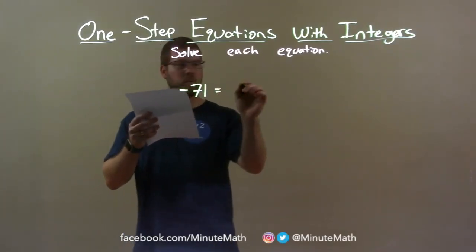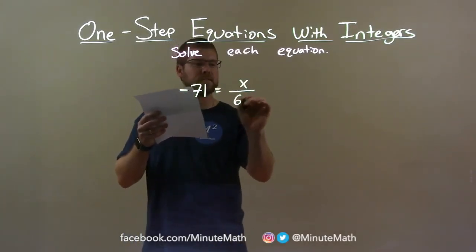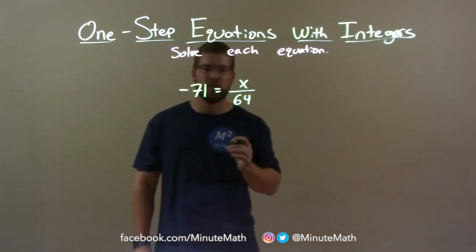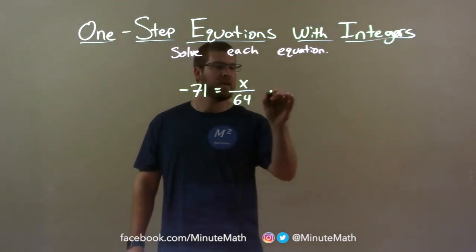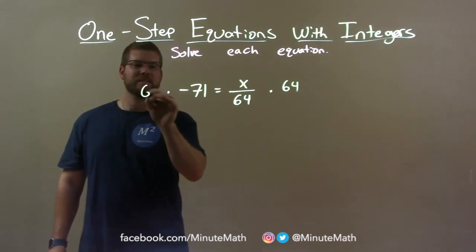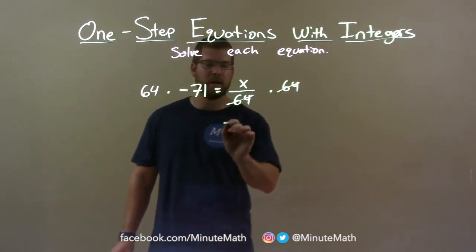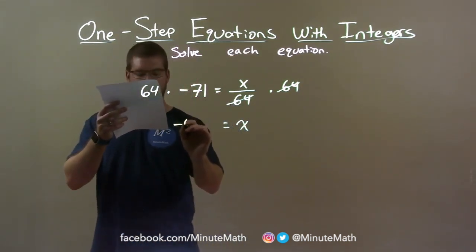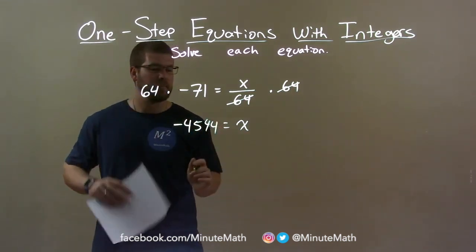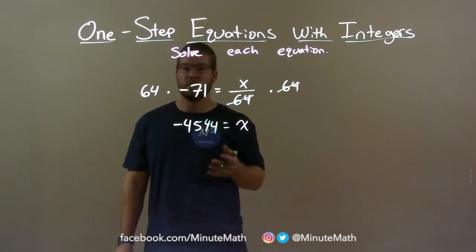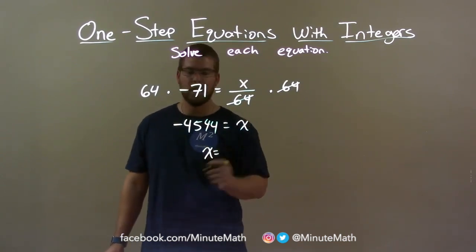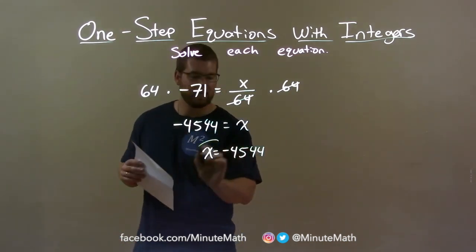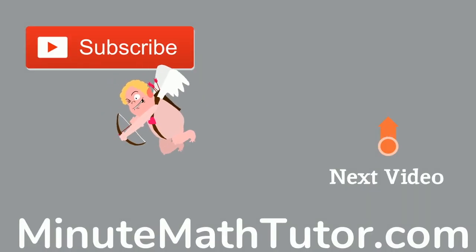Negative 71 equals x over 64. I want to get x by itself — it's being divided by 64. Opposite of division is multiplication. If I multiply both sides by 64, the 64 on the right cancels, giving me x by itself. Now, 64 times negative 71 is negative 4,544. So x equals negative 4,544 is our final answer. Minute Math!